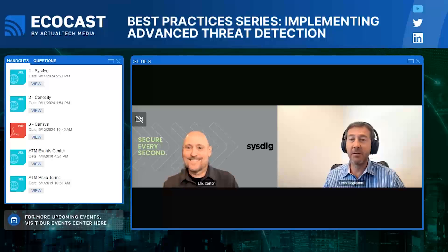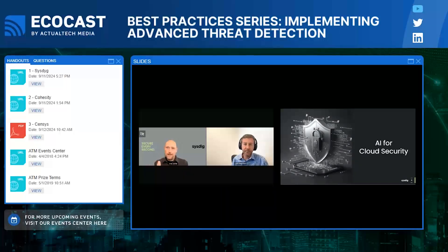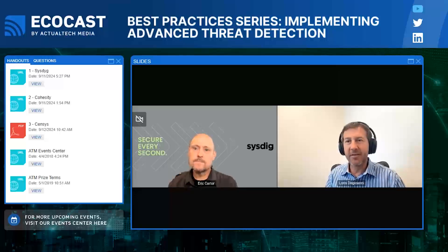Since day one at Sysdig, we've been very excited about the potential applications of AI to what we and our users and customers do. I've been personally involved in our AI initiatives, and in particular, involved with Sage. For our customers who are trying to better secure their clouds, that's where we want to go in the conversation next. As we started thinking about AI for cloud security, what did you have in mind? What are the principles that guided how to use AI in our solution to help this mission of securing clouds?